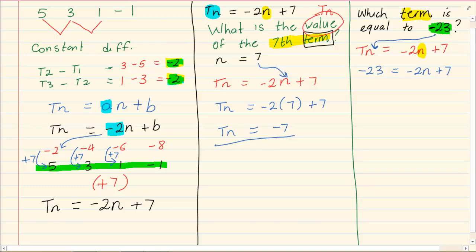So we are going to substitute minus 23 in Tn's place. And then we are going to solve for N. So if we take the 7 over we have got minus 30 is equal to minus 2N divided by minus 2 divided by minus 2 and we have N is equal to 15. So which term equals to minus 23? The 15th term will equal to minus 23. Thank you for watching.